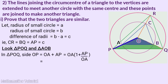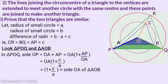So we will add OA into 1 plus C by A. That is, triangle POQ side OP is 1 plus C by A into OA, which is 1 plus C by A into side OA of triangle AOB. Triangle AOB side OA scaled by 1 plus C by A gives triangle POQ side OP.